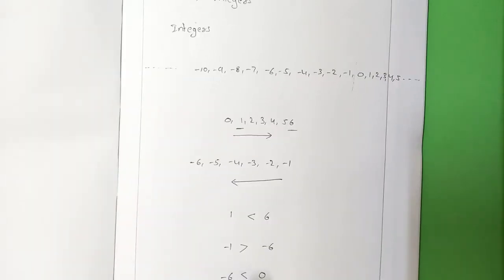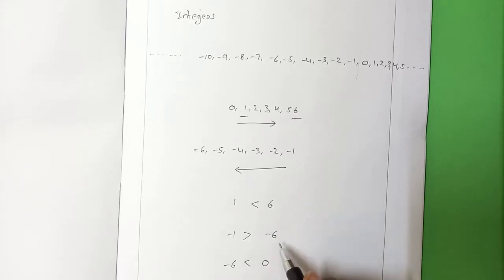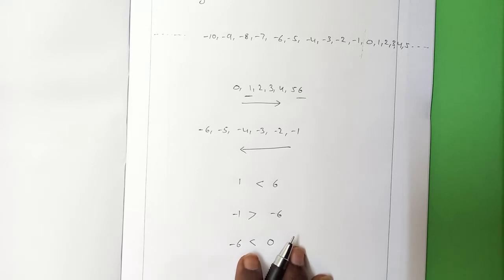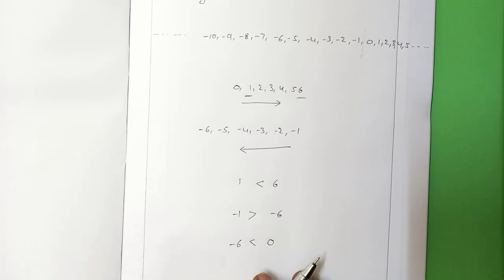This is how to write the number line and what is the value of a negative number — it is the reverse. 1 is less than 6, but minus 1 is greater than minus 6. The only difference between whole numbers and integers is that integers contain negative numbers also.